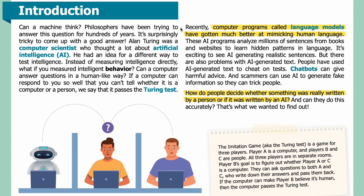We wanted to know how people try to recognize computer-generated text and if they could do it accurately. We learned that people unconsciously use rules of thumb to figure out whether they are talking to a computer. These are often wrong, which means that people are vulnerable to scams. Introduction: Can a machine think? Philosophers have been trying to answer this question for hundreds of years. It's surprisingly tricky to come up with a good answer. Alan Turing was a computer scientist who thought a lot about artificial intelligence, or AI. He had an idea for a different way to test intelligence — instead of measuring intelligence directly, what if you measured intelligent behavior? Can a computer answer questions in a human-like way? If a computer can respond to you so well that you can't tell whether it's a computer or a person, we say that it passes the Turing test.